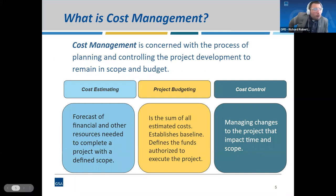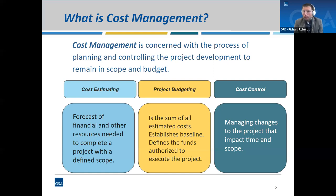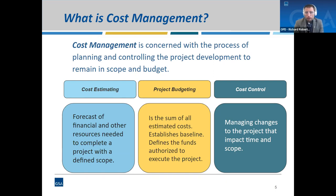So what is cost management? GSA's cost management is concerned with the process of planning and controlling project development to remain within scope and within budget. Without a scope, there's no budget. There are three main components: first is cost estimating — a forecast of financial and other resources needed to complete a project with a defined scope. Think about cost estimating as being part art, part science. I compare an estimate to a hurricane forecast: depending on how close you are to the award date, the path can be predicted more accurately — just as a hurricane path can be predicted more accurately closer to landfall.